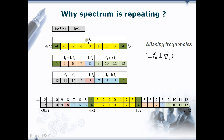F0 is given from minus 4 to plus 4, that is from minus Fs/2 to plus Fs/2. So plus 4 Hz is aliased with 12 Hz and minus 4 Hz. Similarly, minus 4 Hz is aliased with 4 Hz and minus 12 Hz.